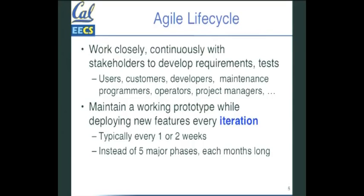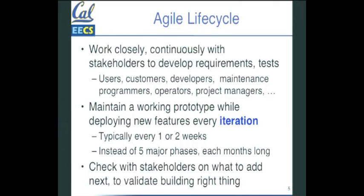It was an Agile Manifesto — a rebellion against the conventionalism of these major phases, each taking a month with hundreds of programmers and extensive documentation. Let's instead work with the customer continuously and check what you do next. A lot of the problem is that programmers would anticipate what customers or stakeholders would want rather than just asking them. So every week or so, let's make sure we're building the right thing, not just what they told us to.